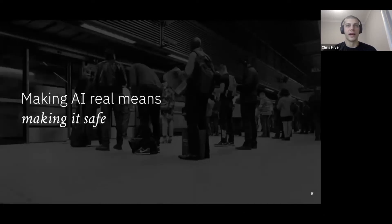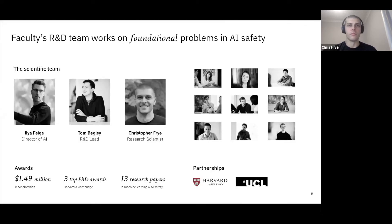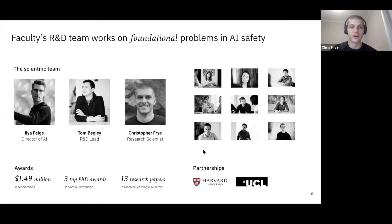At Faculty, we believe that making AI real is synonymous with making it safe. That's why Faculty has an R&D team that focuses on original research on the foundational problems in AI safety. Despite being a relatively small team, we've already made significant progress on these problems — around 13 research papers in the past two years since the team was founded. I'm a research scientist on the R&D team and a primary contributor to our AI safety research work.